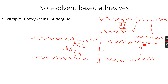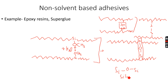In the case of non-solvent based adhesives, we have the cross-link Si-O-Si, which we can write like this. This is known as the siloxane cross-link.